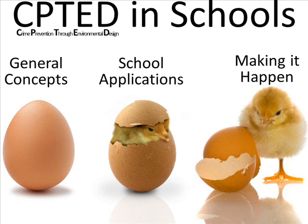We're going to look at three different areas today. First, general concepts — general ideas of crime prevention through environmental design, which will also be similar to previous videos I've created. Then we're specifically going to look at school applications, and finally, we're going to talk about how to actually make it happen.